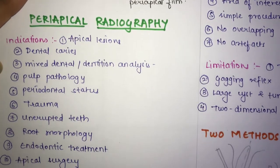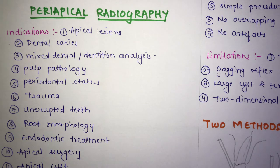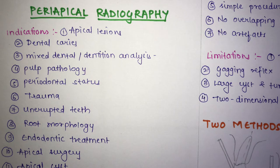Periapical radiography is a technique of an oral structure where the film is placed in the oral cavity while the x-ray source is outside. It is an intraoral radiographic technique, as opposed to extraoral techniques.